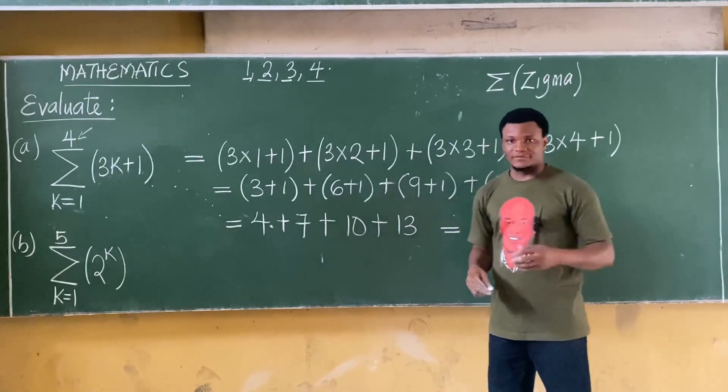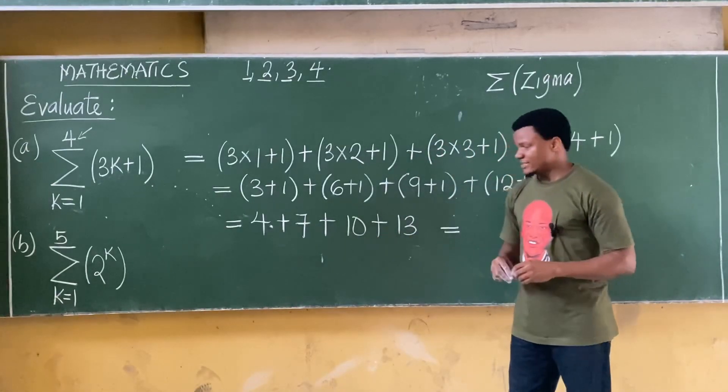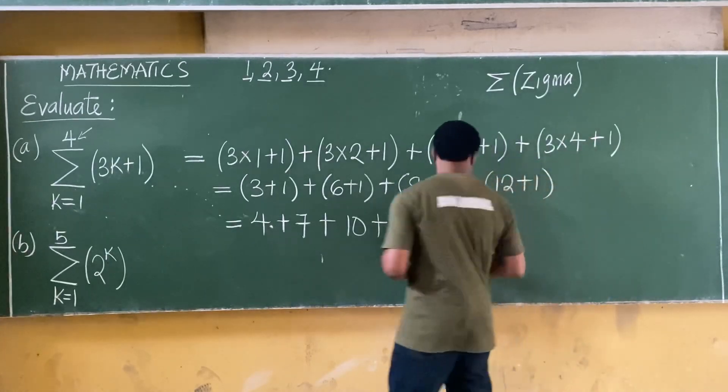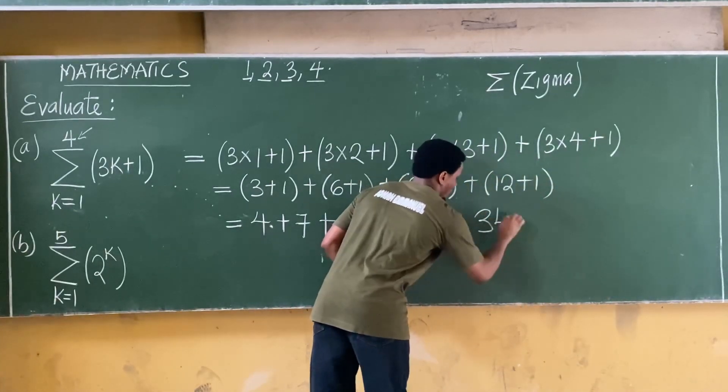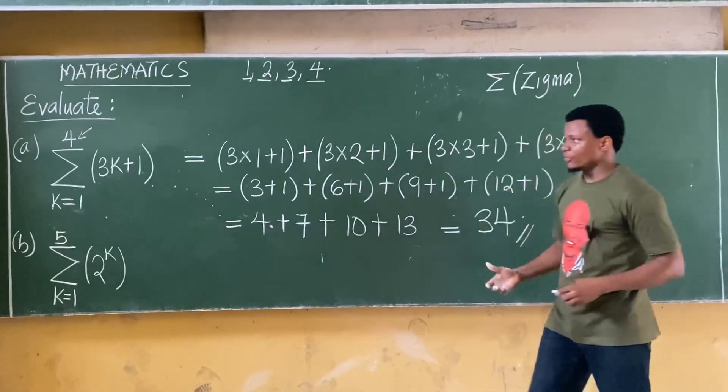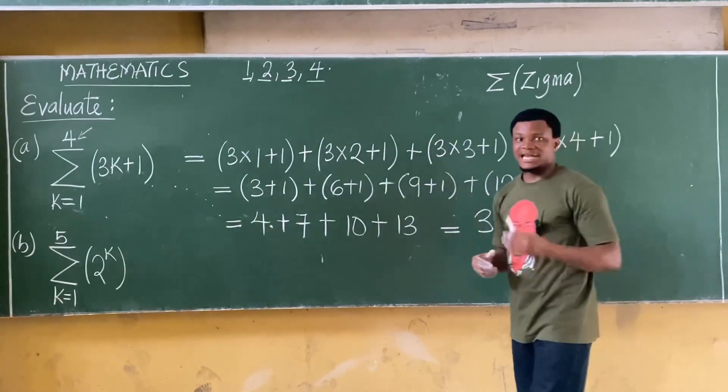Eleven plus ten, that's about twenty-one. Twenty-one plus thirteen, that's about thirty-four. In essence the answer to this question is 34. So basically this is how we solve this question on summation.